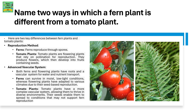Both ferns and flowering plants have roots and a vascular system for water and nutrient transport. Ferns can survive in moist, low-light conditions, whereas flowering plants such as the tomato plant have adapted to various climates due to their seed-based reproduction.